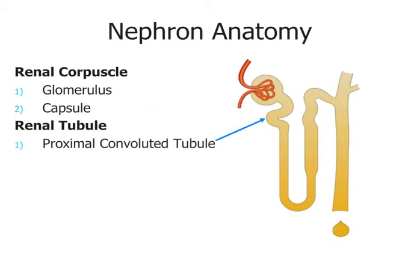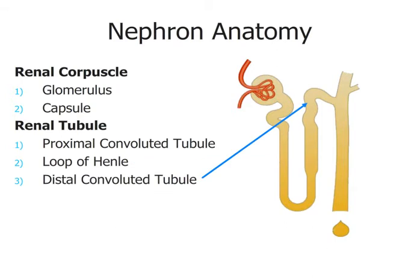The renal tubule consists of everything else in the nephron. First is the proximal convoluted tubule — proximal means near, so it's near the glomerulus, and convoluted means wavy. Distal to that is the loop of Henle or nephron loop, where a lot of solute and water are reabsorbed. It has two limbs: the descending limb where fluid travels downward, and the ascending limb which brings fluid up toward the collecting duct. Just distal to the ascending limb is the distal convoluted tubule, also a major site of reabsorption.